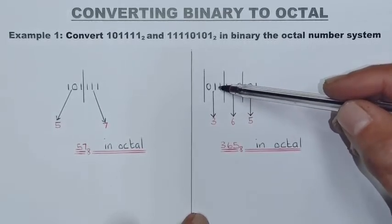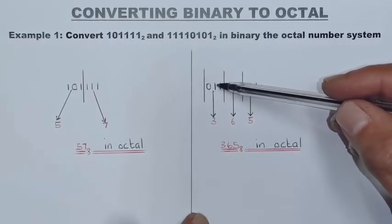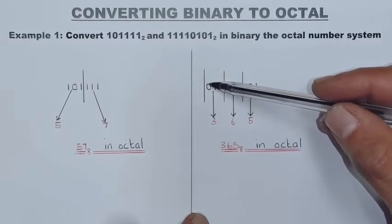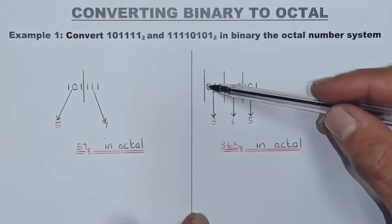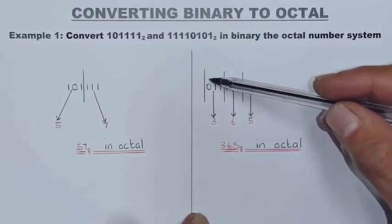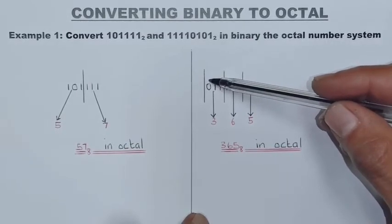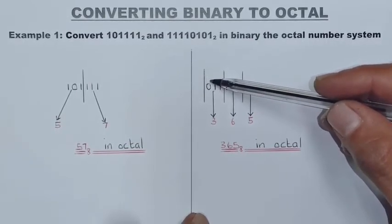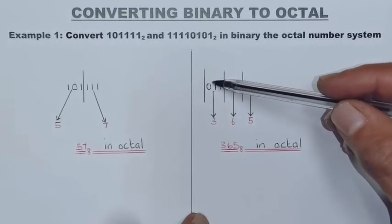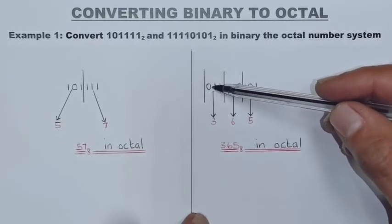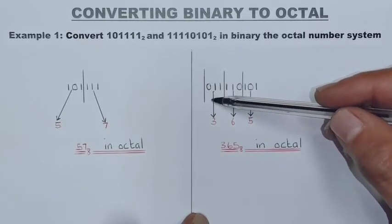And the next one will be 011. Now you can see what I've done here. I've added a 0 right, just to make it three digits again. Don't add a 1. If you add a 1, the value is not going to be the same, which means this binary value, if I add a 1, will be 7.